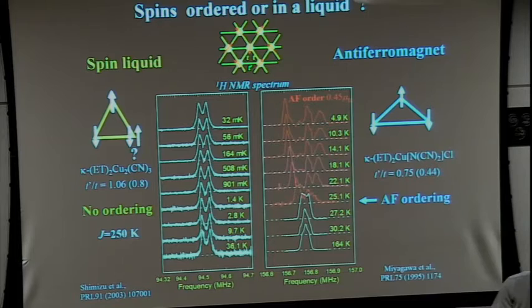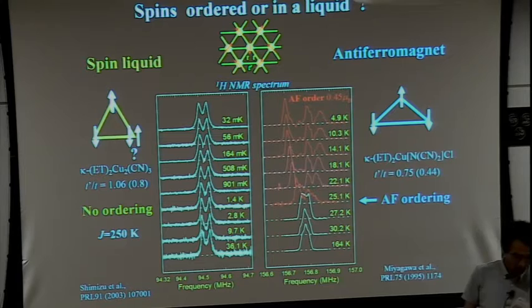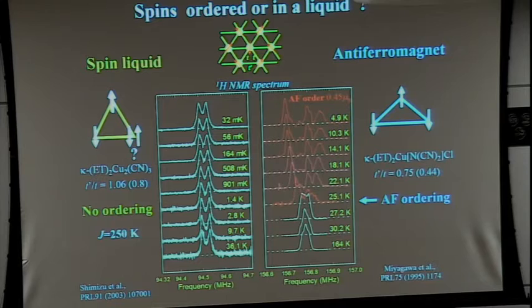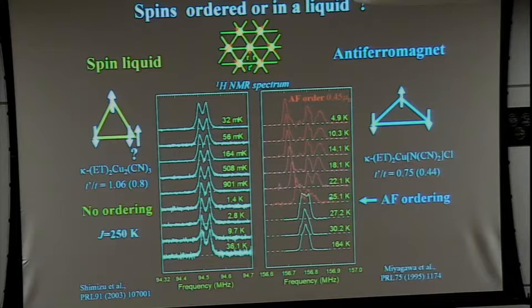Let's resume the issue of the spin liquid. In yesterday's lectures, I showed you some experiments which evidence the quantum spin liquid nature and magnetic ordering depending on the degree of frustration of the lattice. The two materials I showed: one is the deformed triangle lattice and the other is the nearly isotropic triangle lattice. The deformed triangle lattice shows clear magnetic ordering below 25 or 26 Kelvin, clearly indicated by the splitting of the NMR line.